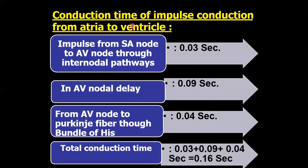Conduction time of impulse from atria to ventricle: impulse from SA node to AV node through internodal pathways is 0.03 seconds. The AV nodal delay is 0.09 seconds. From AV node to Purkinje fibers through bundle of His is 0.04 seconds. Total conduction time is 0.03 plus 0.09 plus 0.04, which equals 0.16 seconds.